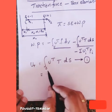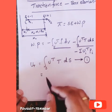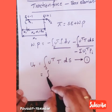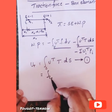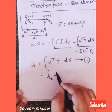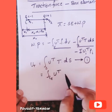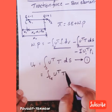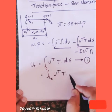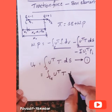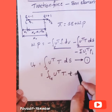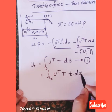First, convert this surface integral to a line integral. I will replace dS by t times dx, assuming unit thickness, making this a line integral of u transpose t dx.